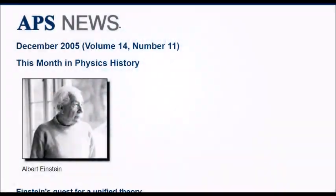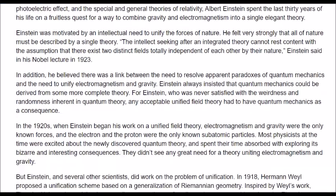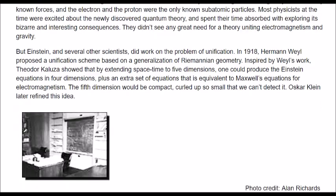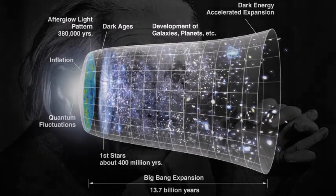Einstein spent his life searching for a unified theory, a way to reconcile the biggest and smallest of things, general relativity and quantum mechanics. He died never having achieved that goal, but leagues of physicists like Hawking followed in Einstein's footsteps.